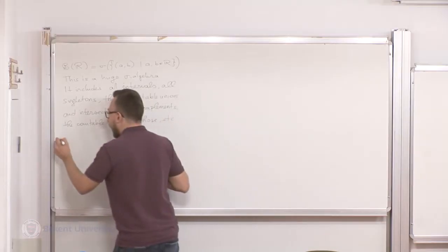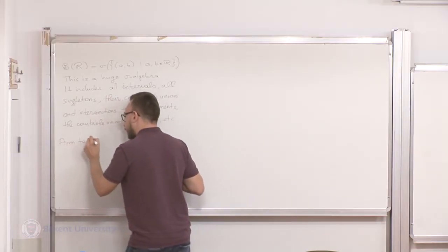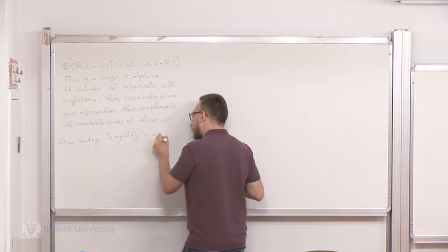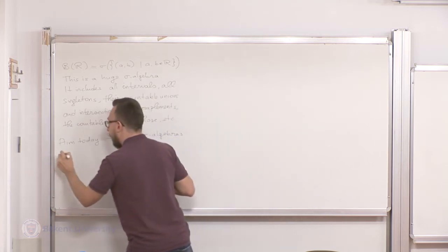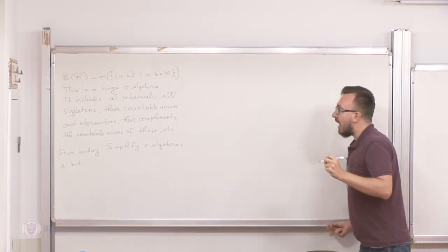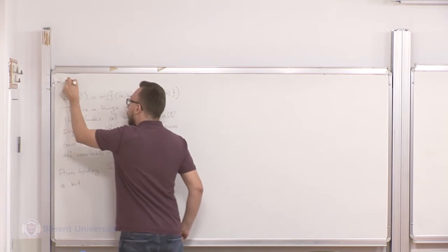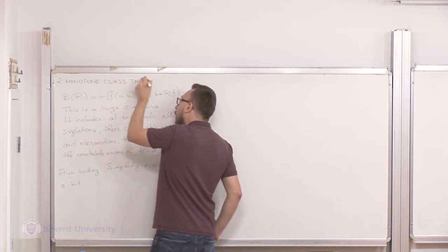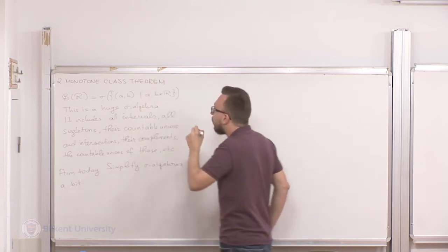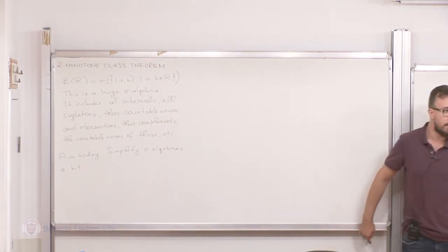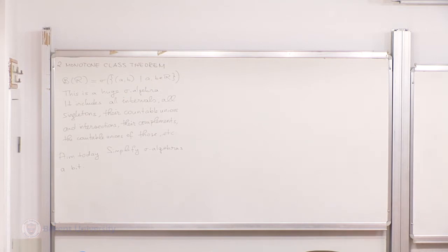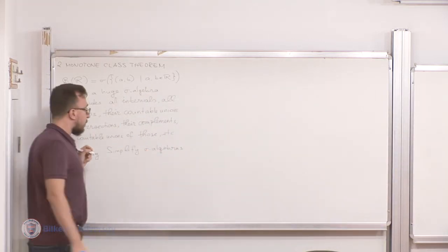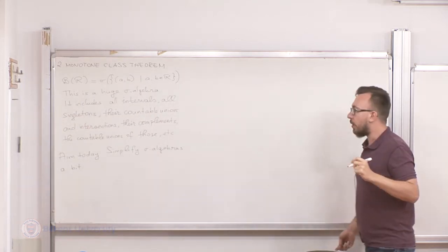Our aim today is to simplify sigma algebras a bit — not too much, but just a bit. This is going to be through the monotone class theorem. This is our second section of our first chapter on probability spaces, and our aim is to simplify sigma algebras. For this reason, we're going to introduce a term called a Dynkin system, or a lambda system.